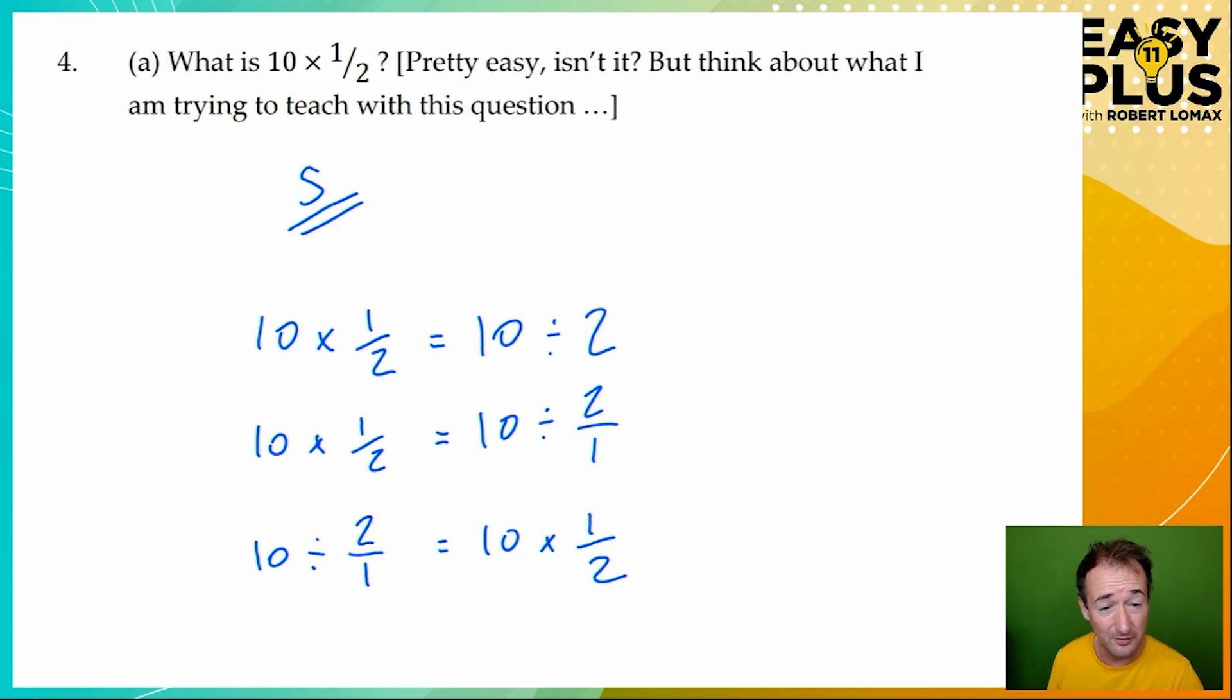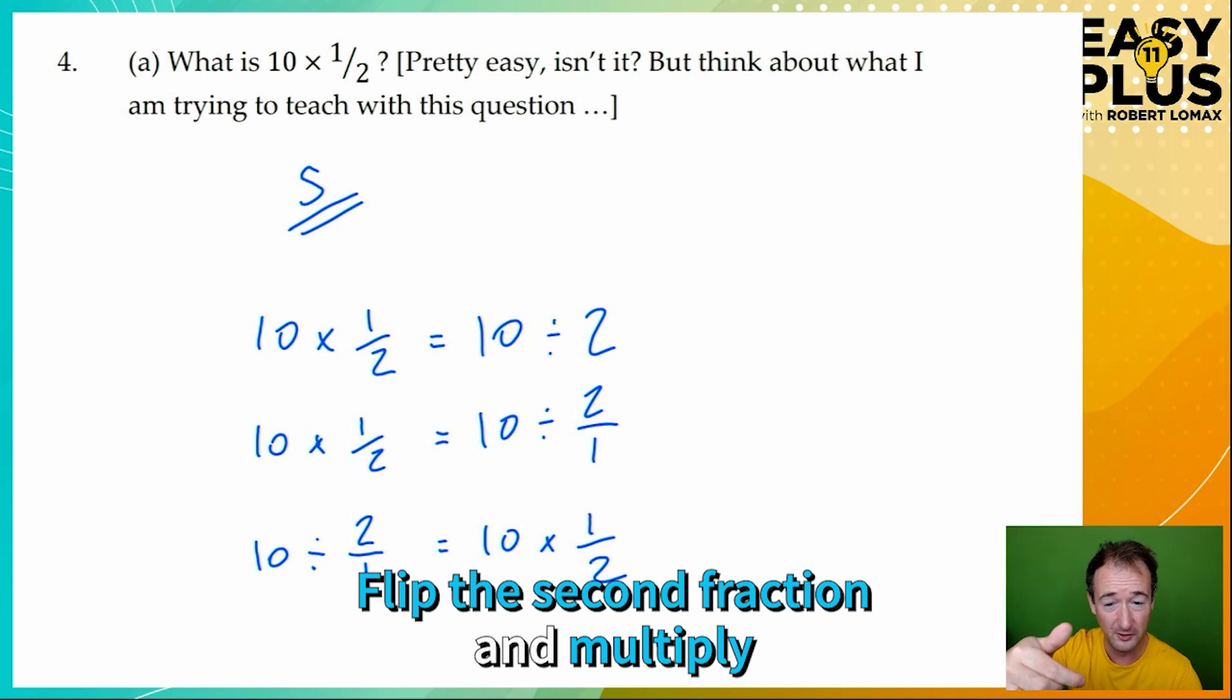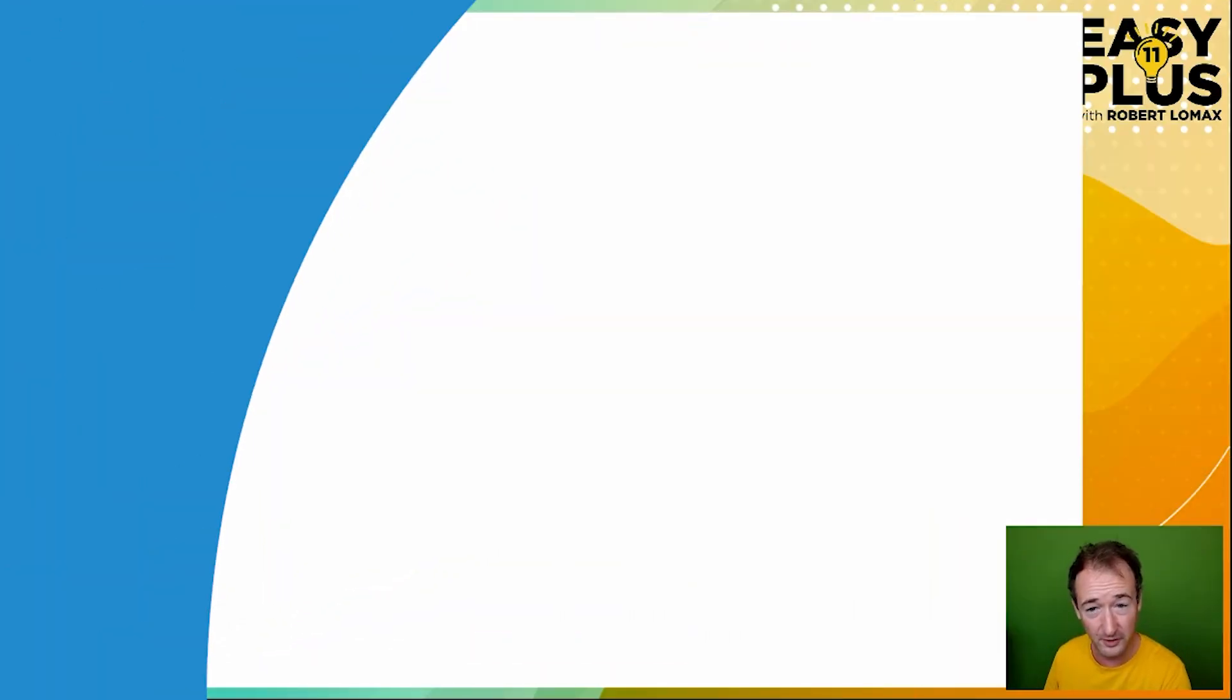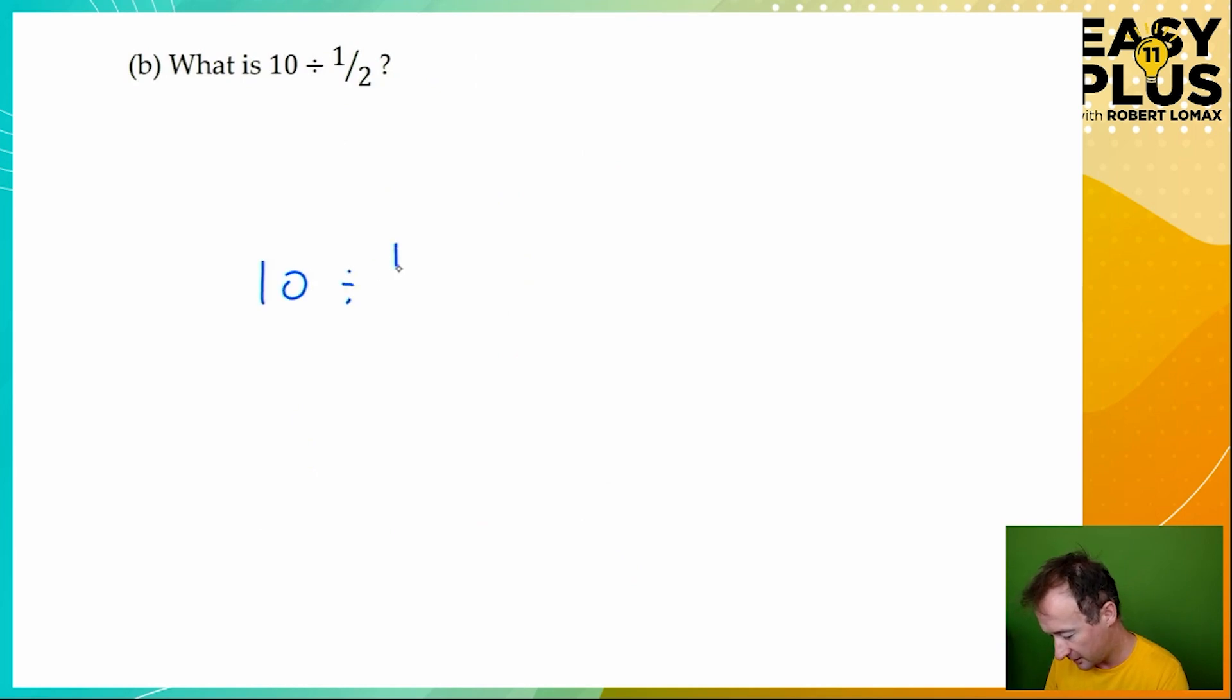Now how is this useful? Well, if you get a fractions division question, you can turn it into a multiplication. All you need to do is turn the second number, the second fraction upside down, and perform a multiplication. And that will be the same thing as we've demonstrated here. What is ten divided by a half? Ten divided by a half equals ten times two over one equals twenty over one, which equals twenty. So dividing by a half doesn't look at all obvious. What does it mean to divide something by a half? But using this method, you can see that divided by a half actually means times by two. We've taken the second fraction, we've flipped it over, and we've changed the division sign into a multiplication sign.